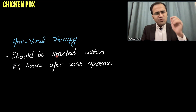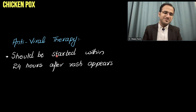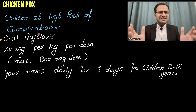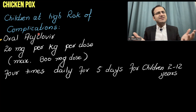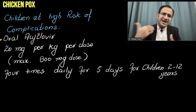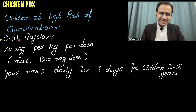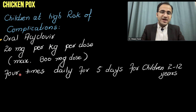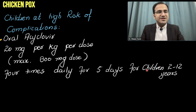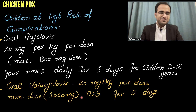Antiviral therapy should be started within 24 hours after the appearance of rash — the sooner the better; the earlier you give it, the fewer complications and the lesser severity of infection. For children at high risk of complications — if the child is immunocompromised or taking aspirin therapy — oral acyclovir 20 mg/kg per dose with a maximum of 800 mg can be given, 4 times daily for 5 days for children aged 2 to 12 years. Oral valacyclovir 20 mg/kg per dose with a maximum of 1000 mg, 3 times daily for 5 days, can also be considered.